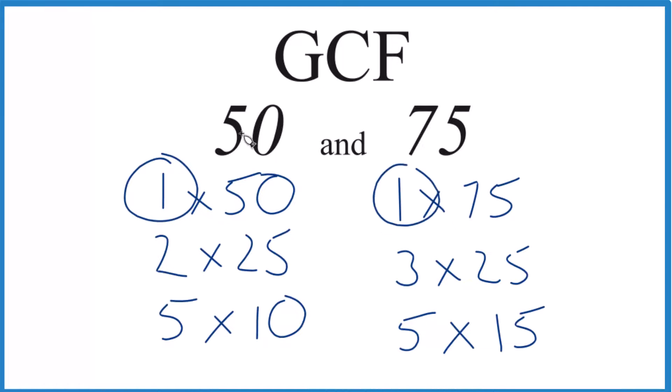1 is in common, 1 goes into 50, 1 goes into 75 evenly, 2, no, 3, it looks like 5, that's in common, and then 25, that's the greatest one.